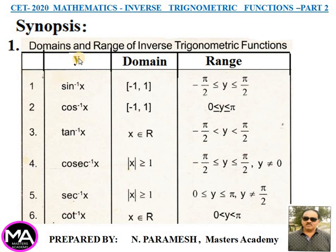Second: y = cos⁻¹x. Domain: closed interval [−1, +1]. Range: closed interval [0, π].